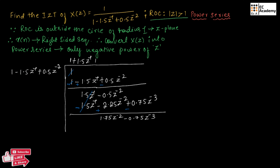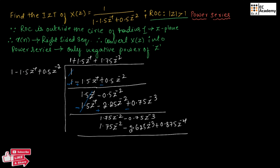Now let us take 1.75 Z to the power of minus 2 times the denominator. This gives 1.75 Z to the power of minus 2 minus 2.625 Z to the power of minus 3 plus 0.875 Z to the power of minus 4. Subtracting and canceling, we get 1.875 Z to the power of minus 3 minus 0.875 Z to the power of minus 4.